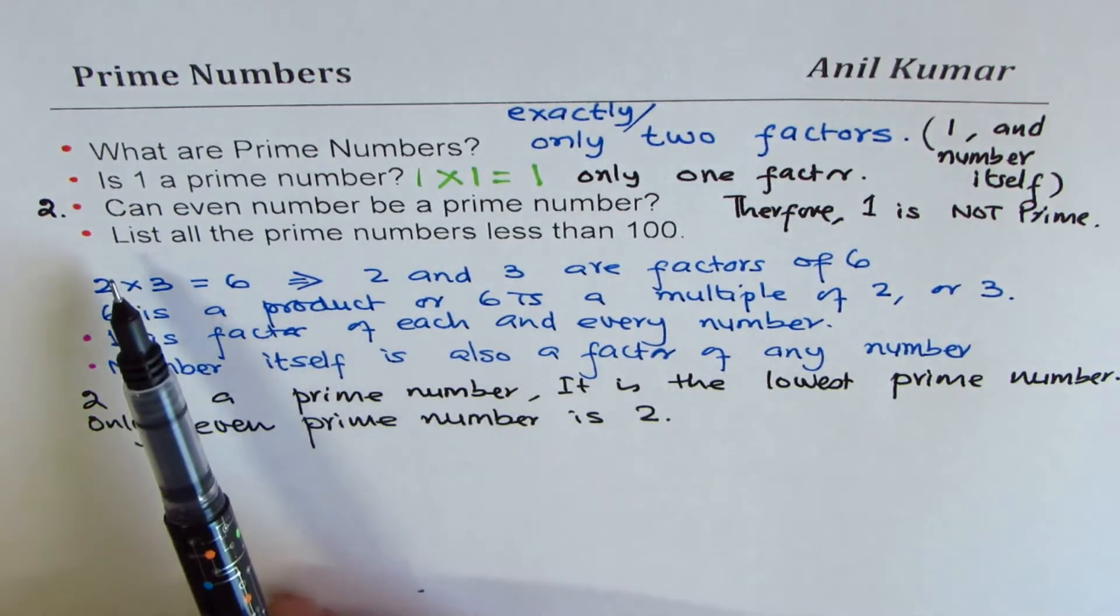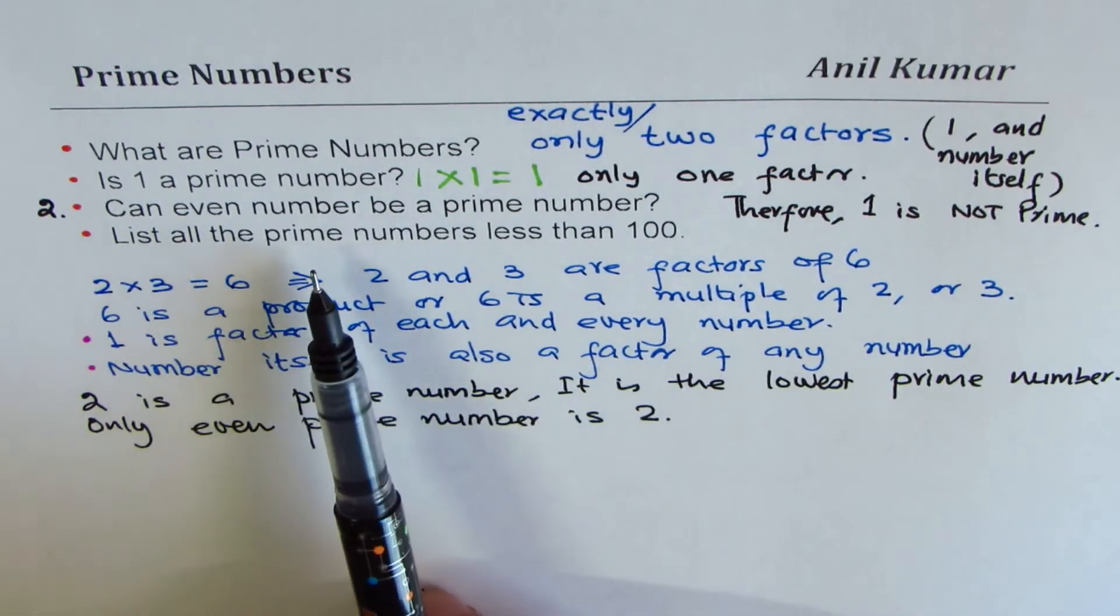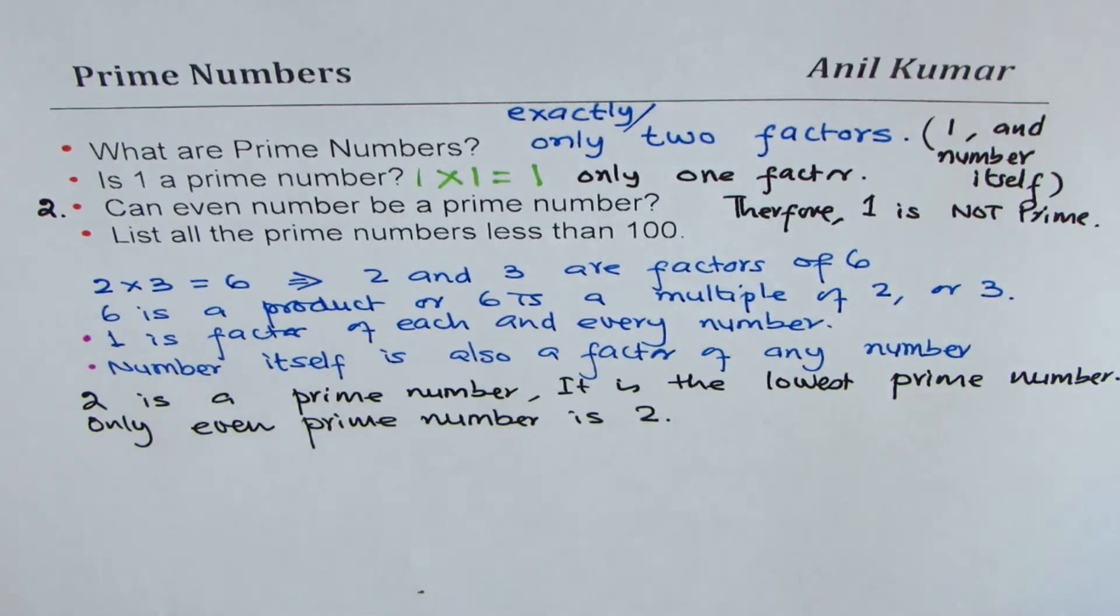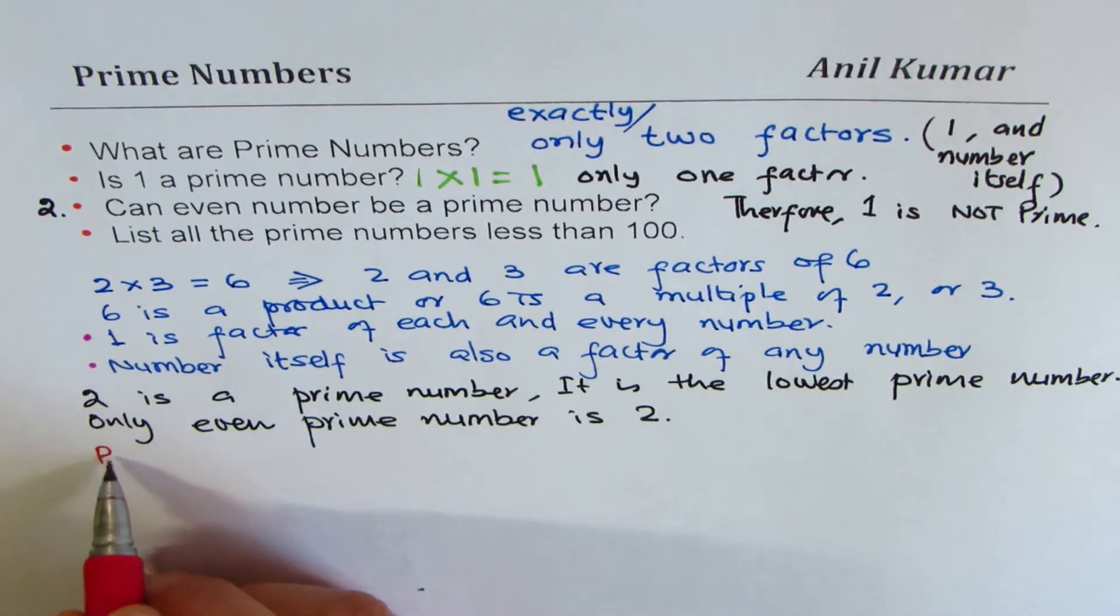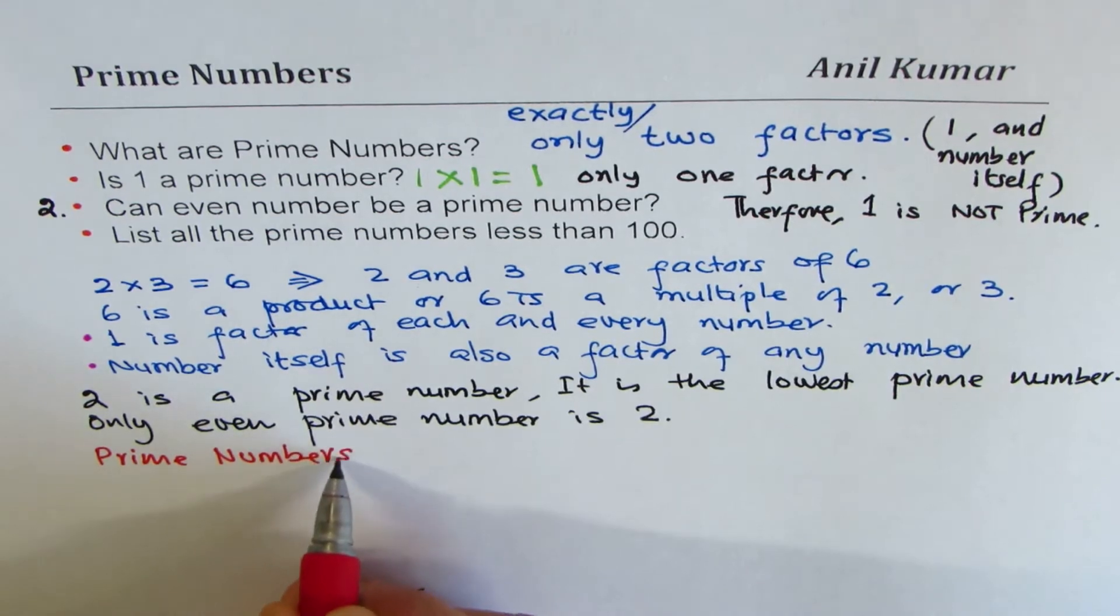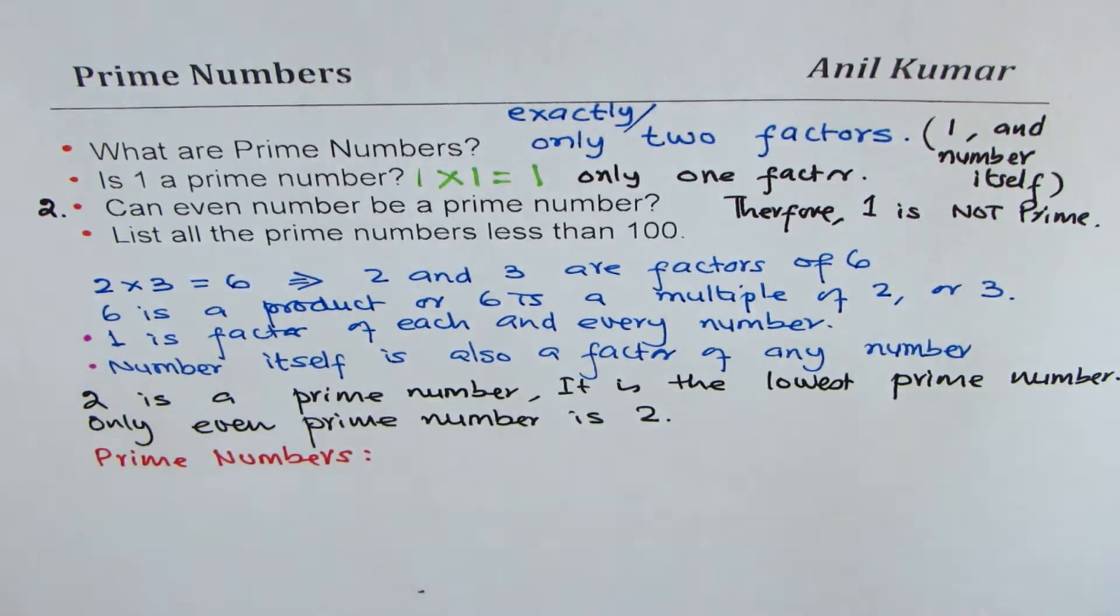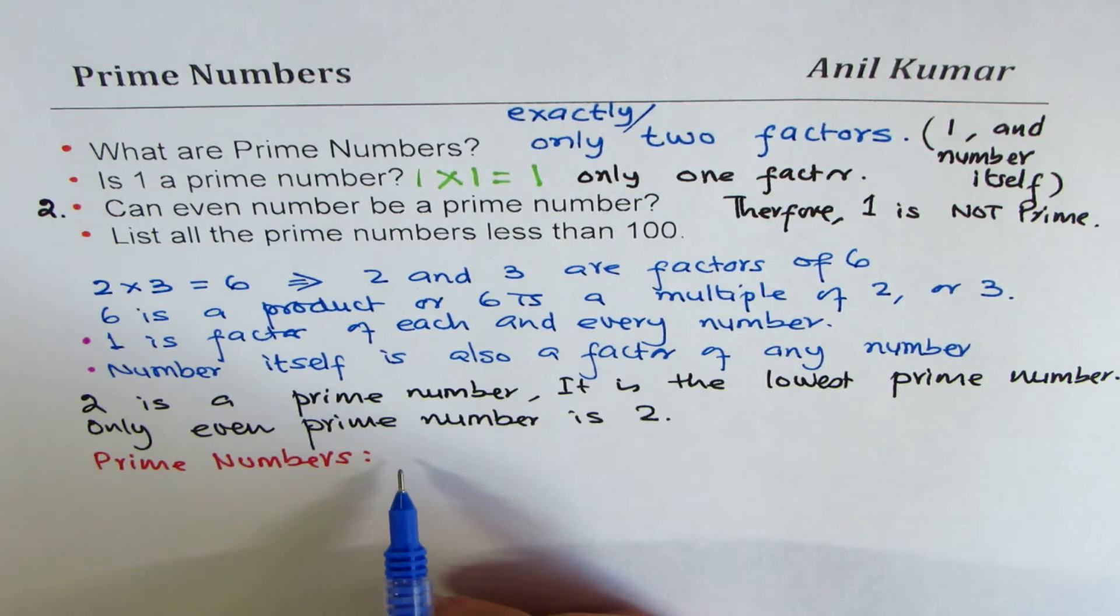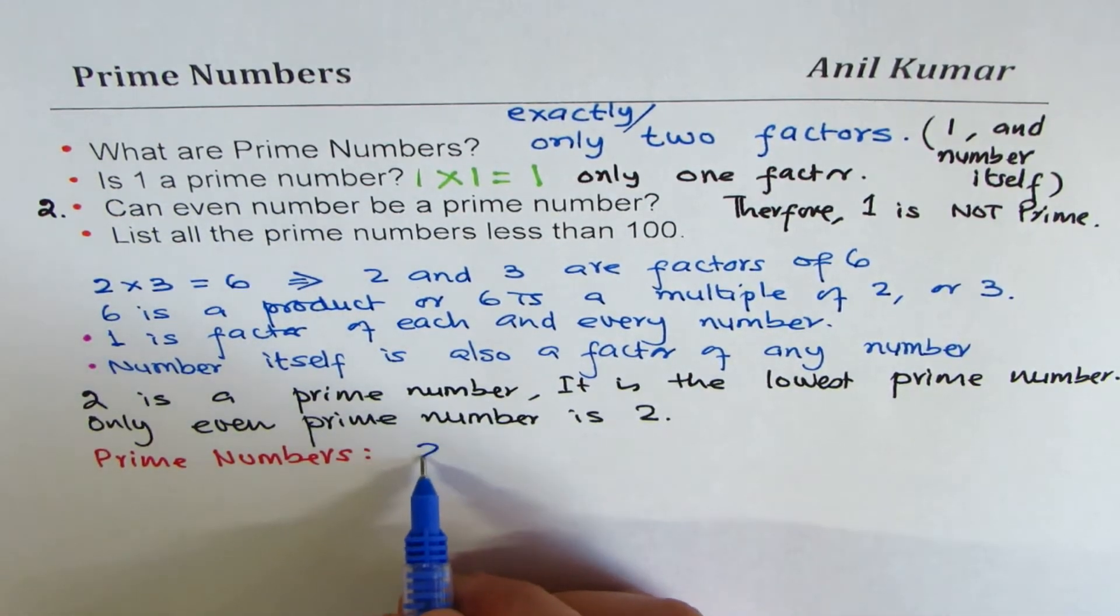Now let's look into the last question, listing out all prime numbers less than 100. So we can begin with prime numbers. Now we have to be careful when we make a list, since sometimes we can do a mistake. Let's begin from number one. One we know is not a prime number, so the lowest is two.